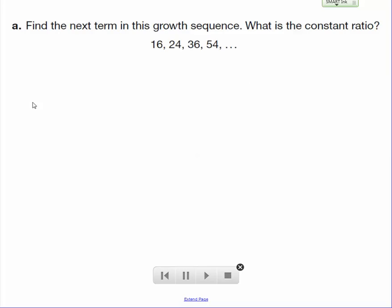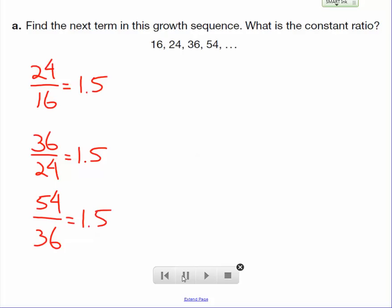Find the next term in this growth sequence, what is the constant ratio? Well, actually, let's start out with the constant ratio here. 24 divided by 16 is 1.5, 36 divided by 24 is 1.5, and 54 divided by 36 is 1.5. Let me stop for a second and tell you where I'm getting these numbers. I'm dividing each number in the sequence, each term by the previous term.